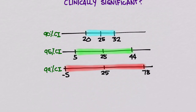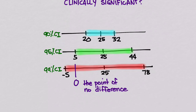For a 99% confidence interval, the point of no difference — that is, a value of 0 — is included in the interval. So you cannot say with 99% confidence that there is a difference between vasopressor A and vasopressor B, because the value could be 0, or even negative 5, meaning vasopressor A could actually do better than vasopressor B.